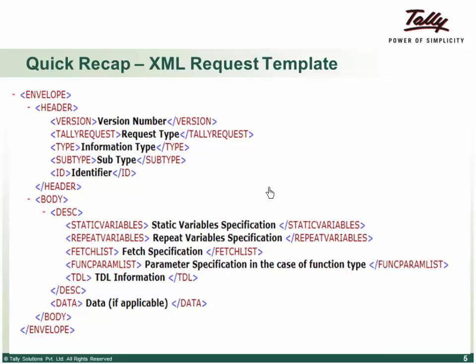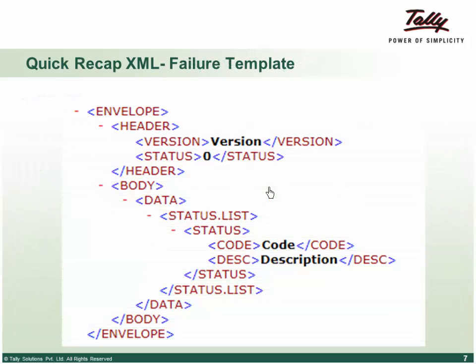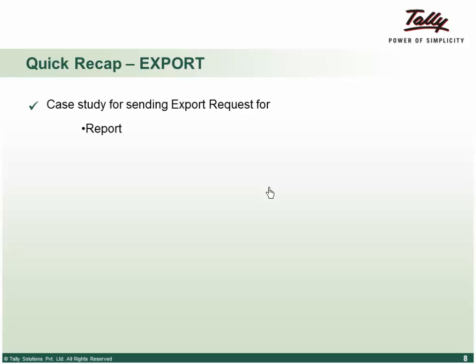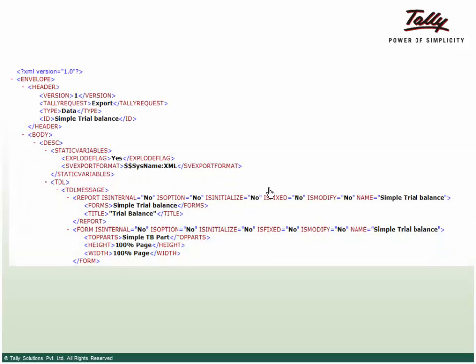The response tag shows a status — if successful, the status is '1' and the data tag returns data. If there is a failure, status shows '0' and the description provides failure details. We also covered the export request with a case study: opening an existing Tally report like the trial balance (request type 'export', type 'data', ID 'trial balance'), and creating a custom TDL message in XML to design a report that doesn't exist in Tally.